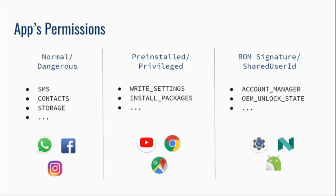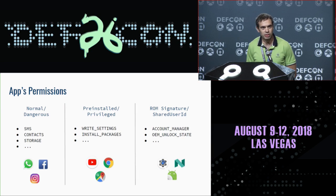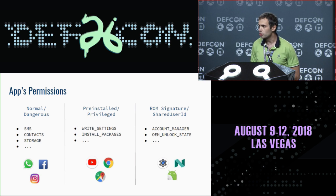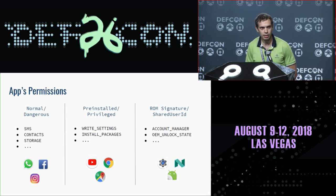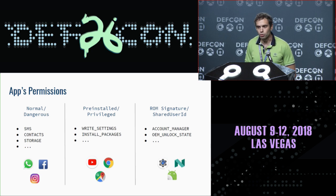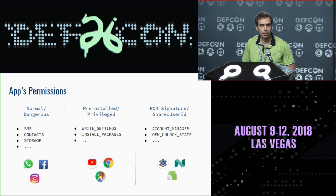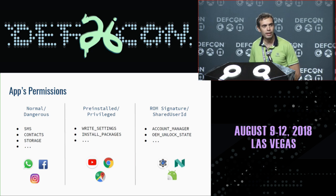Android framework provides hundreds of permissions to permit application access to user data or system features, and all these permissions can be grouped into three categories. Normal and dangerous permissions can be granted by a user to an app, permitting access to SMS, device contacts, and storage. Pre-installed apps shipped with the device have more extended permissions such as changing phone settings or silent app installation. The most privileged applications are signed with the ROM signature or associated with some Android component like media or radio. It would be very valuable to find a way for a low-privileged app from the first category to attack apps from the second or third category and gain some privileges.